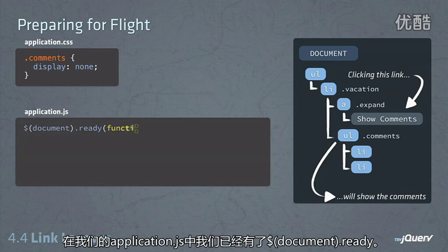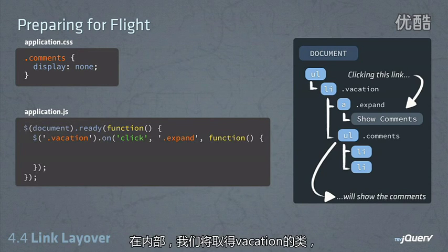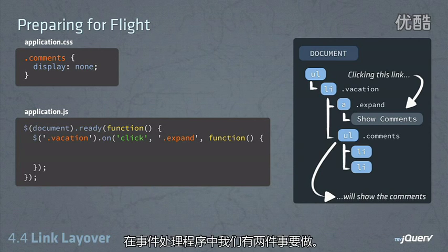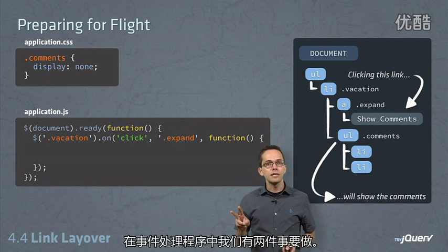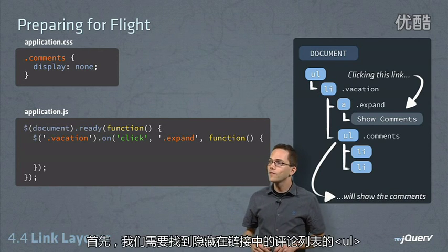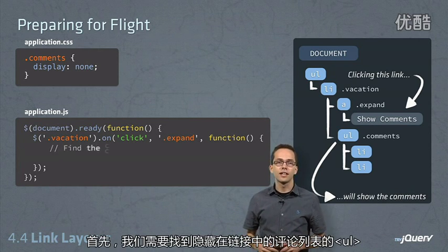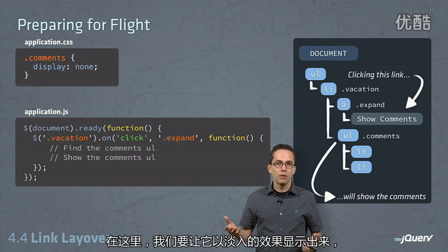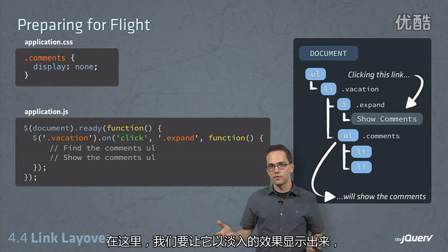Inside of our application.js, we have our document ready. Inside that, we're going to fetch the vacation class, listen for our click event on the link which has the expand class on it, and then run our event handler. There are two things we need to do inside of our event handler: first, we need to find the comments UL which is below our link, and then we need to show it — or in this case, fade it in.